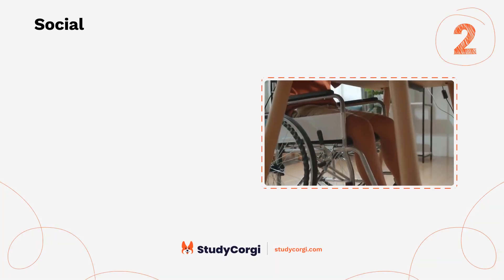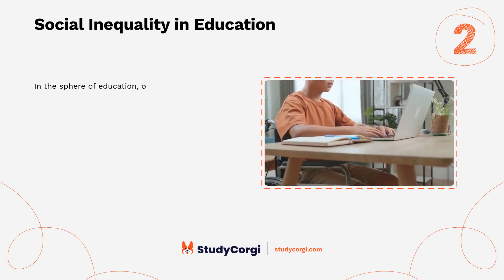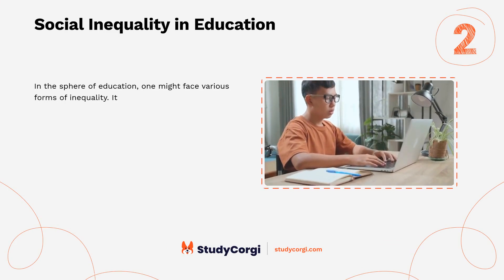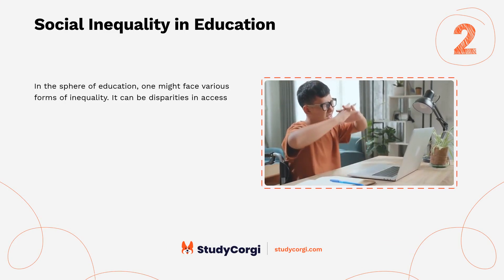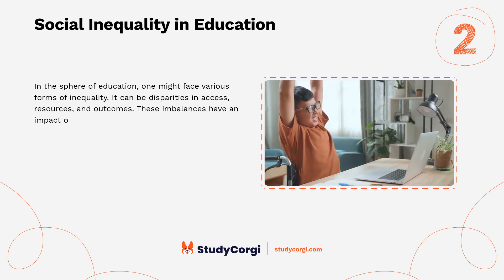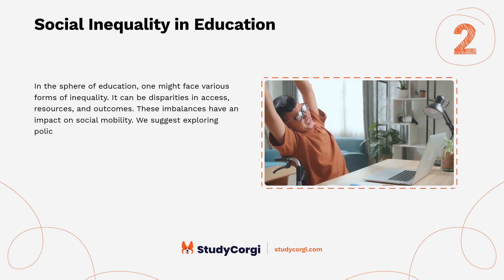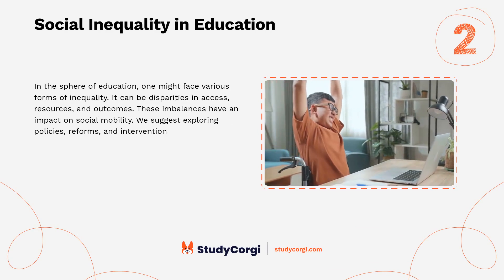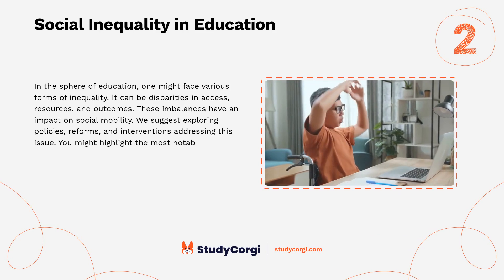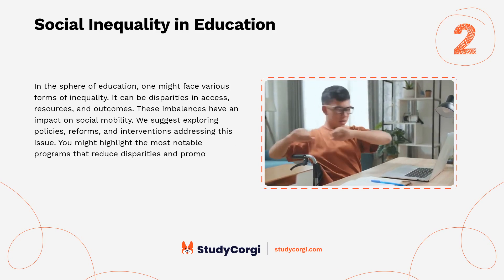Social inequality in education. In the sphere of education, one might face various forms of inequality, such as disparities in access, resources, and outcomes. These imbalances have an impact on social mobility. We suggest exploring policies, reforms, and interventions addressing this issue. You might highlight the most notable programs that reduce disparities and promote equal opportunities.